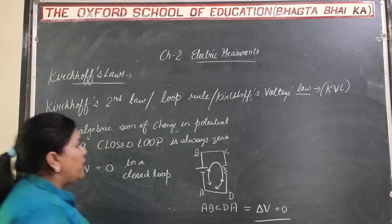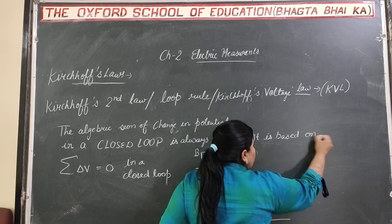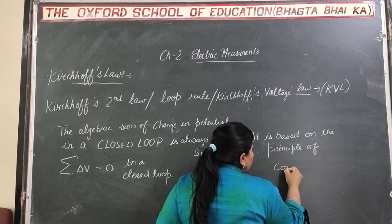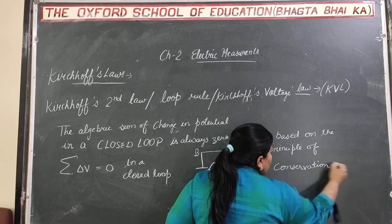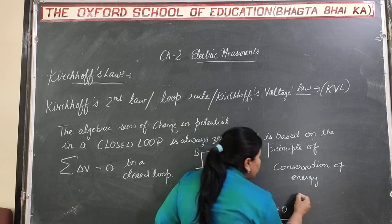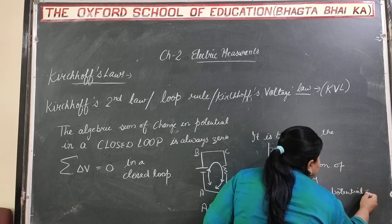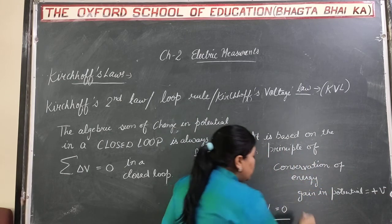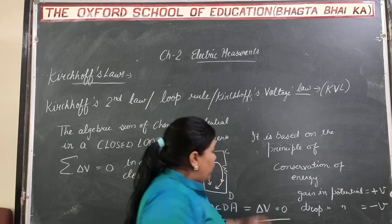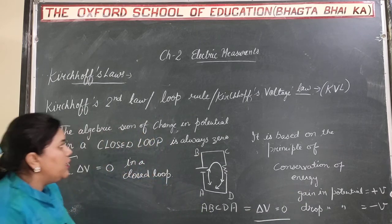On which principle is Kirchhoff's second law based? It is based on the principle of conservation of energy. Remember, if there is a gaining of potential we write it as plus V, but if there is a drop in potential it is written as minus V. Overall, the change in potential in a closed loop is always zero. This is the essence of the second law.